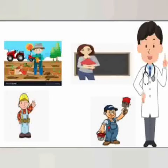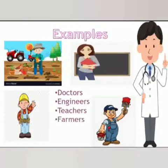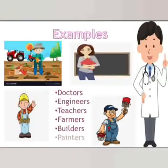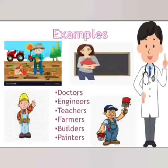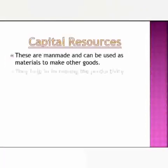Let's have a look at some examples of human resources, which include doctors, engineers, teachers, farmers, builders, and painters. All these professionals with specialized education and skills are examples of human resources. Now let's move to the third type of resource, that is capital resources.